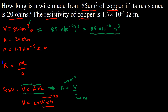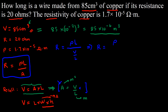Now let us rewrite the resistance equation by expressing area as V over L. So resistance equals resistivity multiplied by L divided by V over L. We can simplify this: resistance equals resistivity times L times L over V, which gives us resistance equals resistivity times L squared over V.